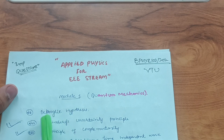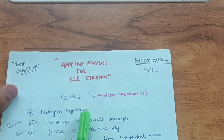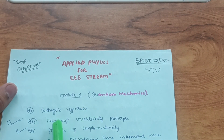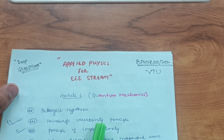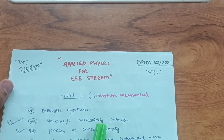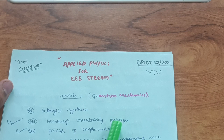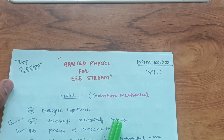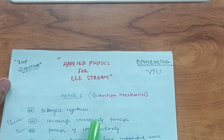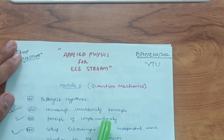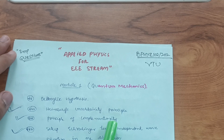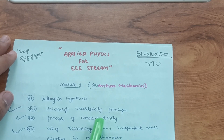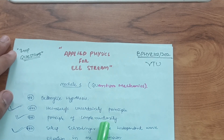First, focus on de Broglie's hypothesis. Then the most important question: Heisenberg's uncertainty principle — specifically proving the non-existence of an electron inside the nucleus. Write the theory accordingly; it's easy to remember. Also, the principle of complementarity is a newly added topic in this scheme that was not present in the 18th scheme — it's very important and will definitely come in the examination.